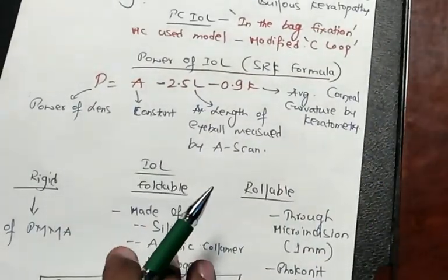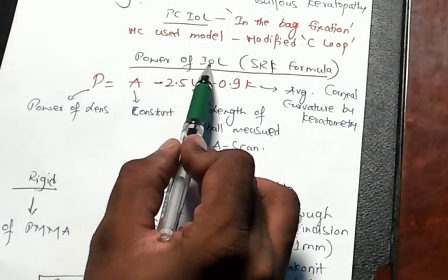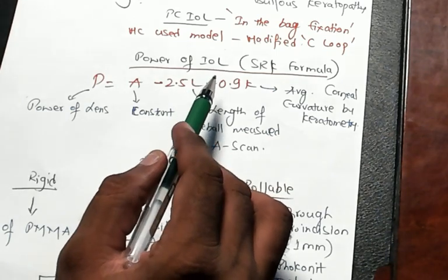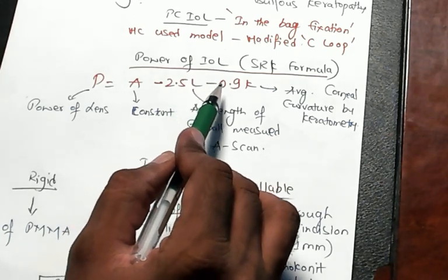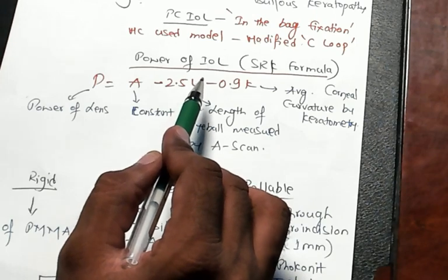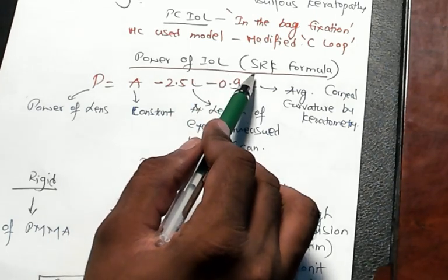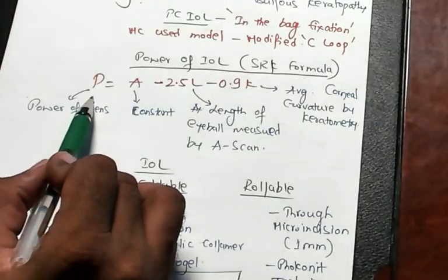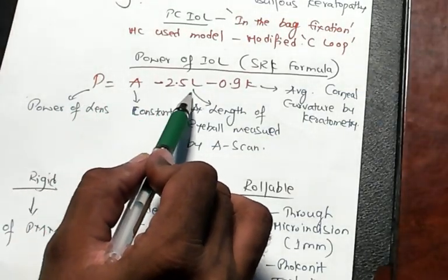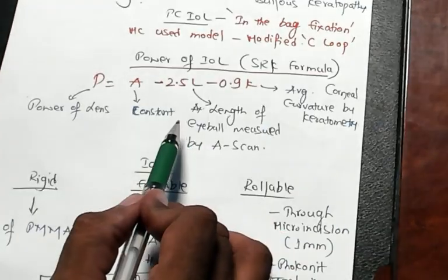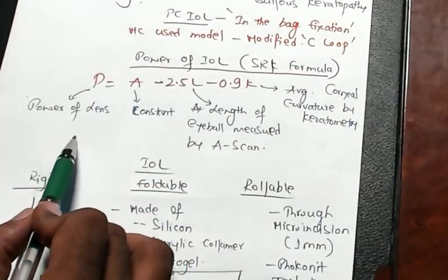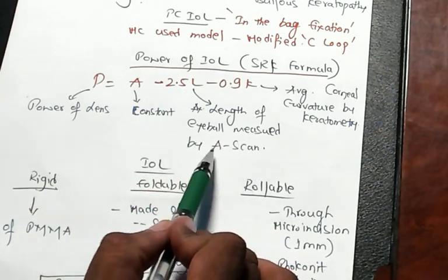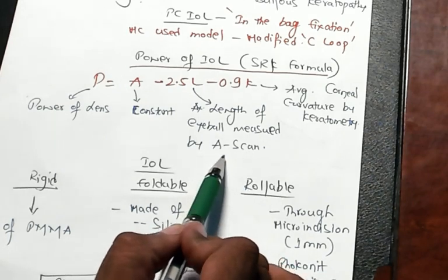Now doctor, how do you calculate the power of intraocular lens? You have to remember SRK formula. What is the formula? P is equal to A minus 2.5 L minus 0.9 K. P is the power of the lens, A is a constant.